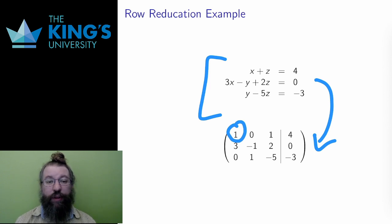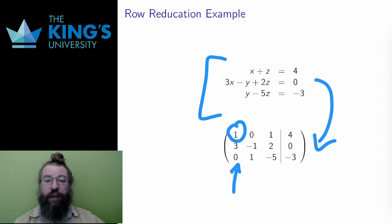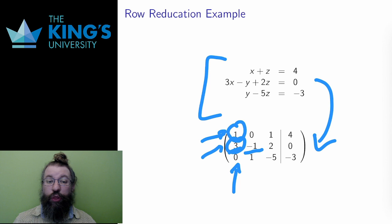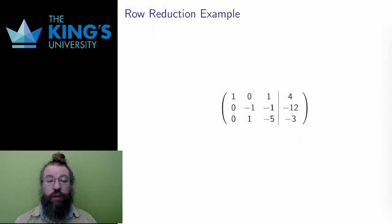Once I have a leading one, I want the entries above and below it to be zero. There are no entries above this leading one, but there are two below. There is a three right below it, and I want to get rid of this three. I will subtract three times row one from row two. Row one multiplied by three is a row with three, zero, three, and twelve. So I subtract those numbers from row two: three minus three is zero, negative one minus zero is still negative one, two minus three is negative one, and zero minus twelve is negative twelve.